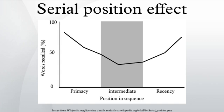According to single-store theories, a single mechanism is responsible for serial position effects. A first type of model is based on relative temporal distinctiveness, in which the time lag between test and study of each list item determines the relative competitiveness of an item's memory trace at retrieval. In this model, end-of-list items are thought to be more distinct, and hence more easily retrieved.